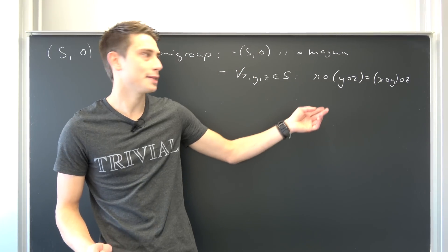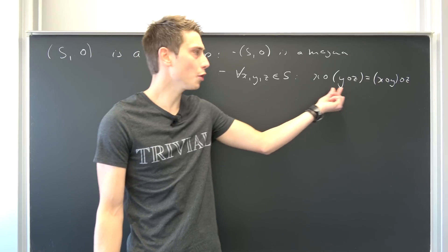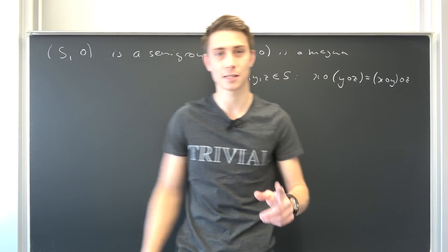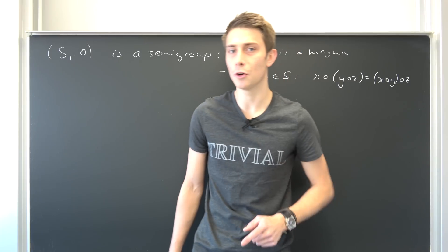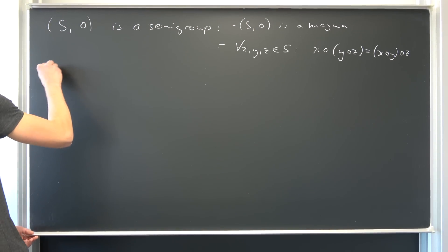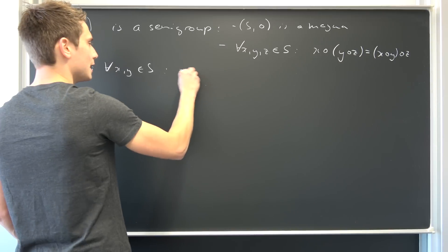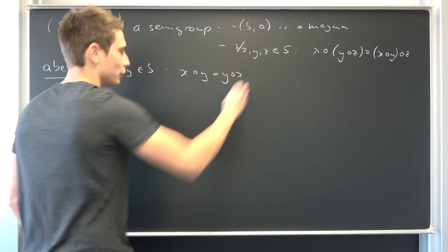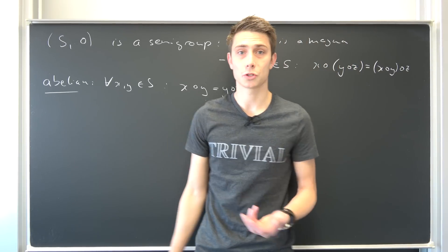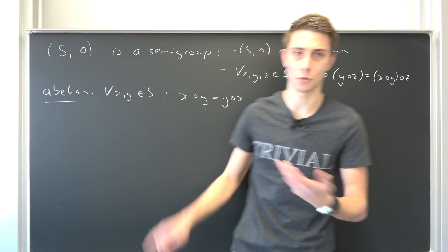Associativity basically means that the order of carrying out the operation is not relevant, but it is relevant on which operands we apply it. So x times y is not the same as y times x — but if it were the same, then we would refer to this as being abelian. An abelian algebraic structure means: for all x and y in S, x ∘ y = y ∘ x. We can also have magmas which are abelian.